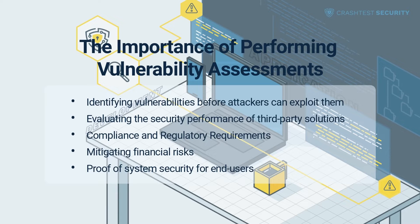Evaluating the security performance of third-party solutions: an API is a significant entry point for most breaches, making API-integrated third-party vendor solutions a potential security risk. Therefore, the VA process undertakes a third-party risk assessment program that detects, identifies, and classifies third-party plugins' regulatory and financial risks. A comprehensive vulnerability assessment also includes tools to gain complete visibility into third-party risk levels to help teams derive efficient threat modeling.